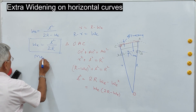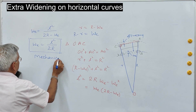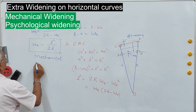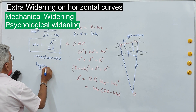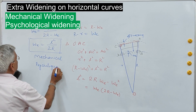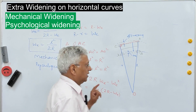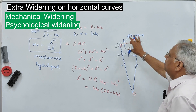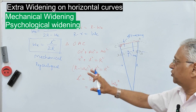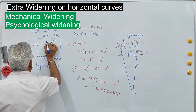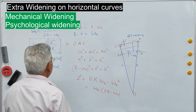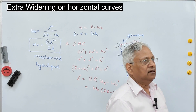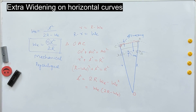There are two types of widening provided on a horizontal curve: mechanical widening and psychological widening. In the derivation we assumed only a single lane. If you have more than one lane, the mechanical widening is NL² / 2R, where N is the number of lanes, L is the wheelbase in meters, R is the radius of the curve in meters, and W_E is in meters.